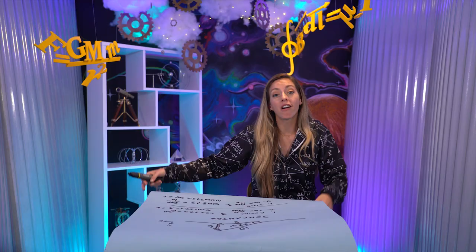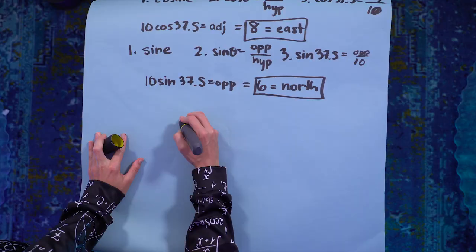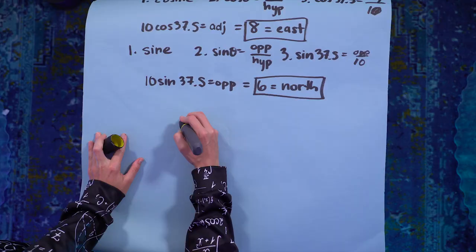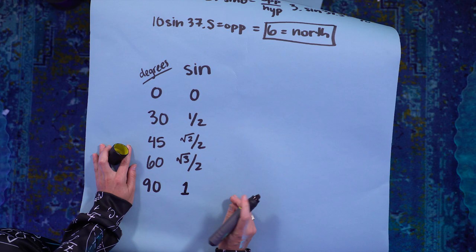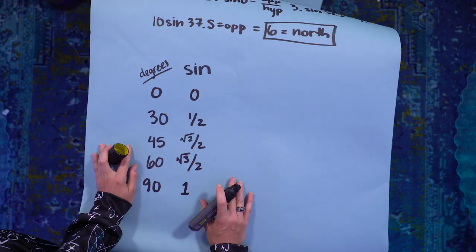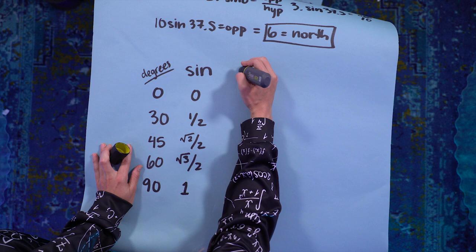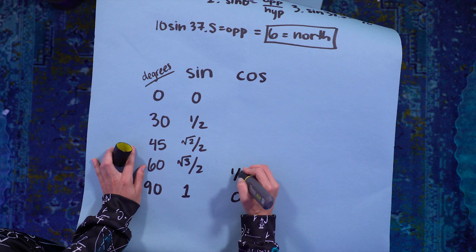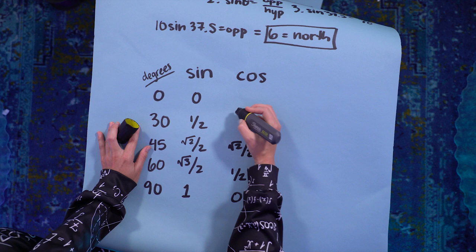The sine of 0 is 0. The sine of 30 is 1 over 2. The sine of 45 is root 2 over 2. The sine of 60 is root 3 over 2. The sine of 90, if you see the pattern, is in fact root 4 over 2, which reduces to just 1. And for some really cool geometrical reasons, cosine is exactly backwards. So if you start at the bottom and work your way up, cosine of 90 is 0. Cosine of 60 is 1 over 2. Cosine of 45 is root 2 over 2. Cosine of 30 is root 3 over 2. And cosine of 0 is root 4 over 2, which equals 1.